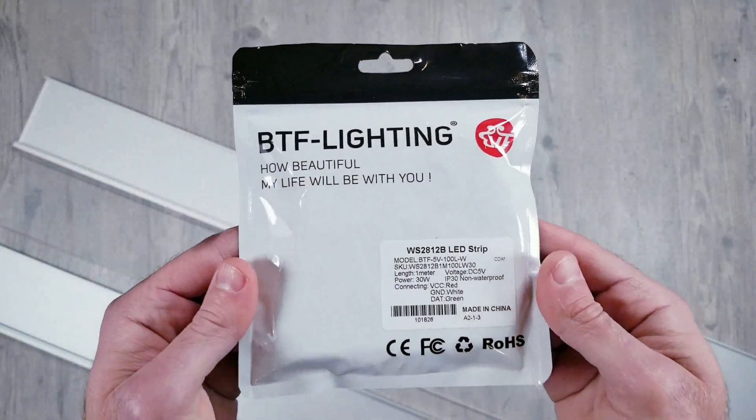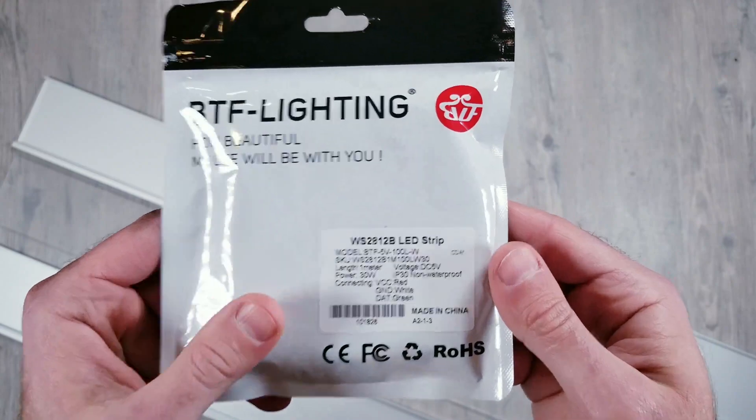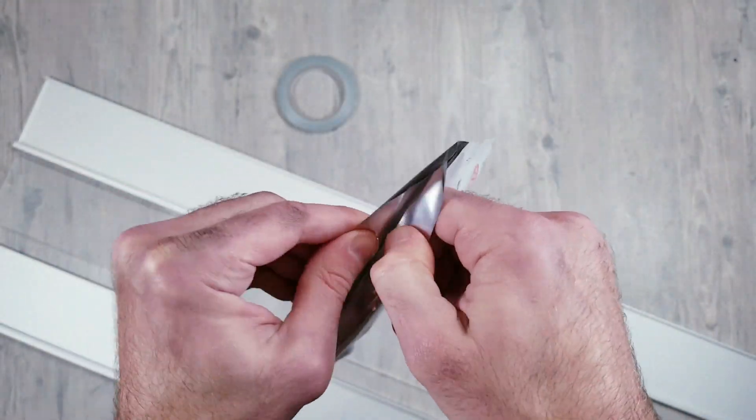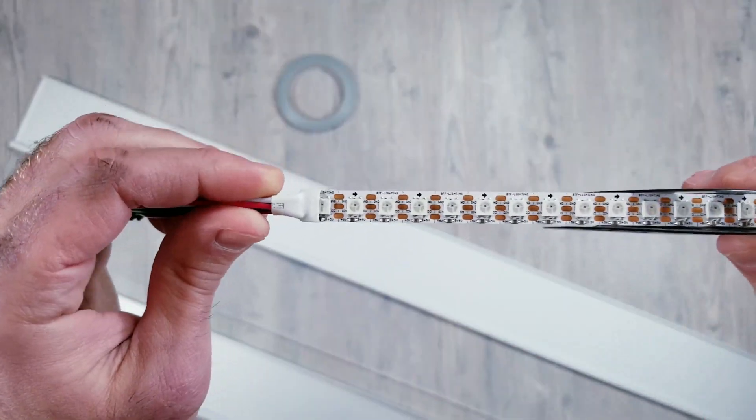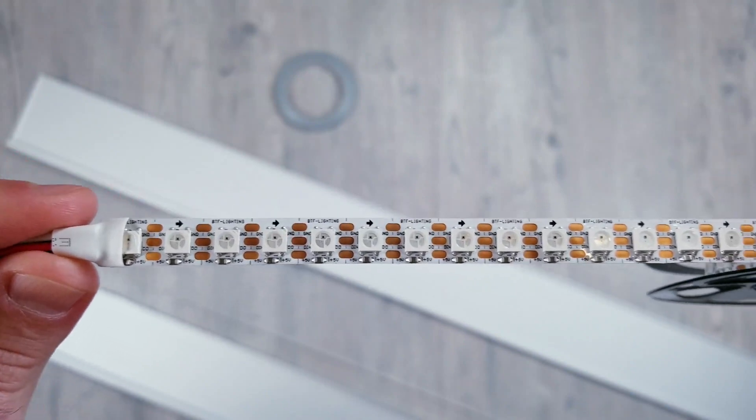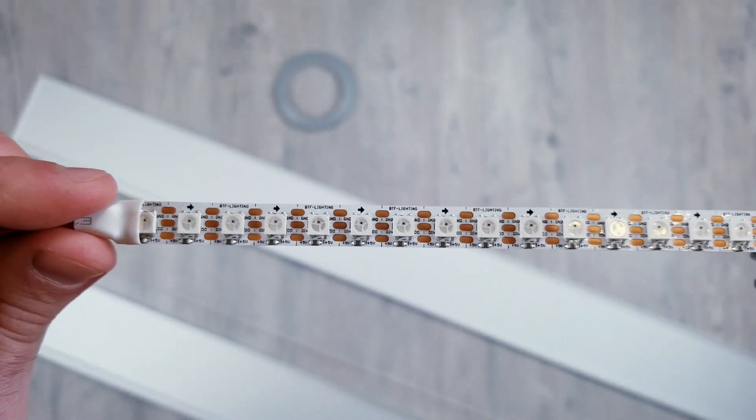For the LED strips, I'm using BTF Lighting WS2812B pixels that have 100 LEDs per meter. These lights work perfectly and they're what I recommend for this product. To get the full smooth neon look, it's recommended to use at least 90 LEDs per meter, which is why I'm using these instead of my usual ones that only have 60.